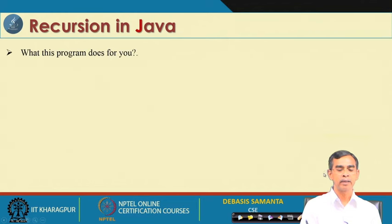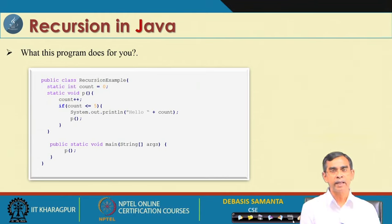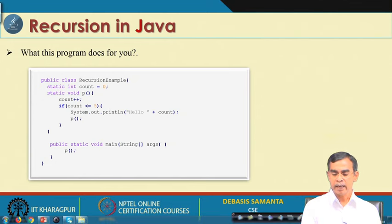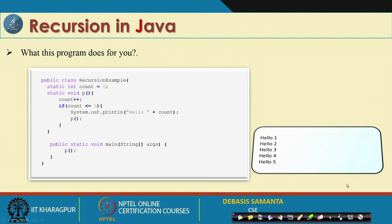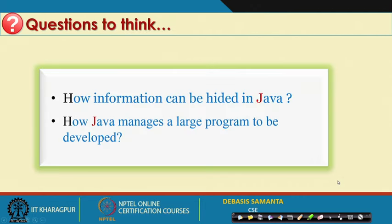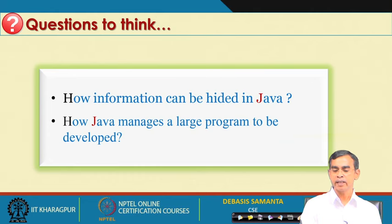Let us consider one more simple program. Can you guess what result this code will give? If you can, then recursion is understandable to you. Running this program will produce a certain output — can you explain why? If you know recursion you will be able to explain it. In our next lecture we will learn about information hiding, and also how a very large Java program can be developed. These are the next topics to be covered.